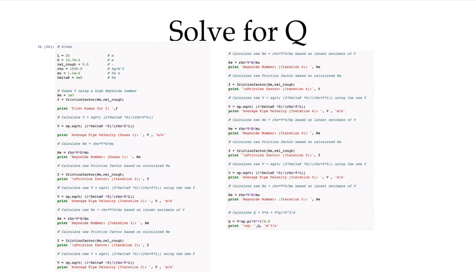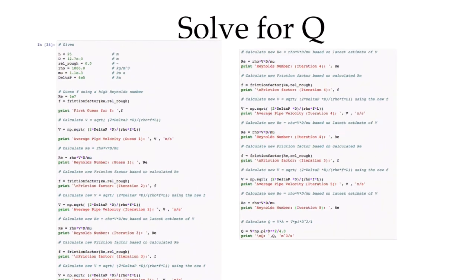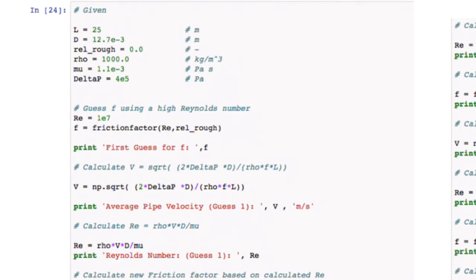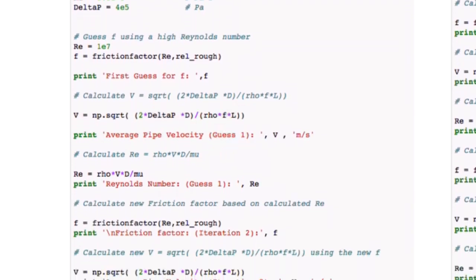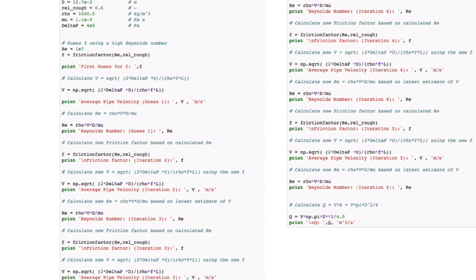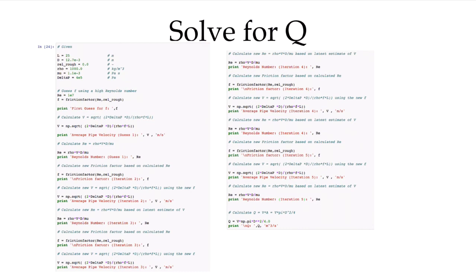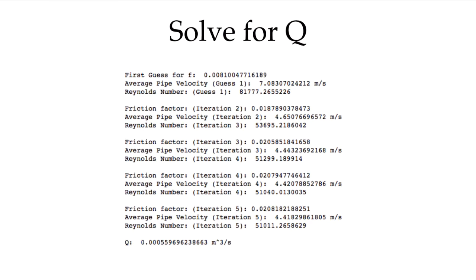Here is the layout I used to solve this in the Jupyter notebook — starting with the givens, implementing the velocity equation, evaluating friction factor and Reynolds number, and simply repeating that for five iterations. The raw output from the notebook shows the exact values I rounded in the tables on the previous slide. Of course, for more complex examples it would be more effective to implement a loop that iterates until a desired convergence tolerance is reached.